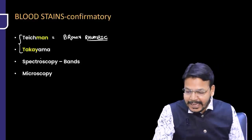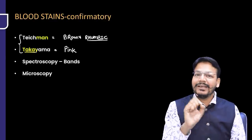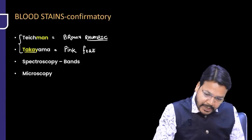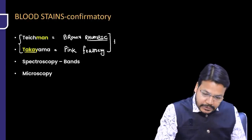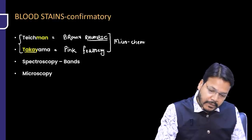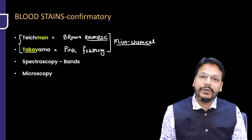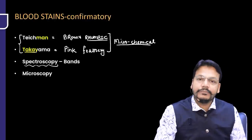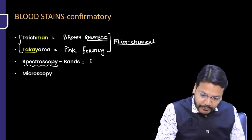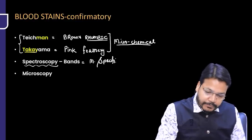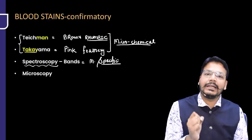Takayama produces a pink or pinkish color — pink feathery crystals. So these are the two types of crystals seen in Teichmann and Takayama. Both are examples of microchemical tests, where crystals are observed under the microscope. What about spectroscopy? It is the most specific confirmatory test for bloodstains — in spectroscopy, we find absorption bands that allow complete analysis of the bloodstain.